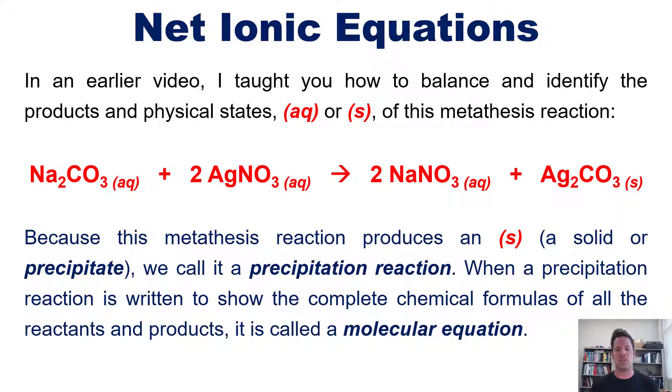Because this metathesis reaction produces an S, that is, a solid or precipitate product, in this case, silver carbonate over here, we call it a precipitation reaction. So, when a precipitation reaction is written to show the complete chemical formulas of all the reactants and products, as we have here, then we call it a molecular equation.